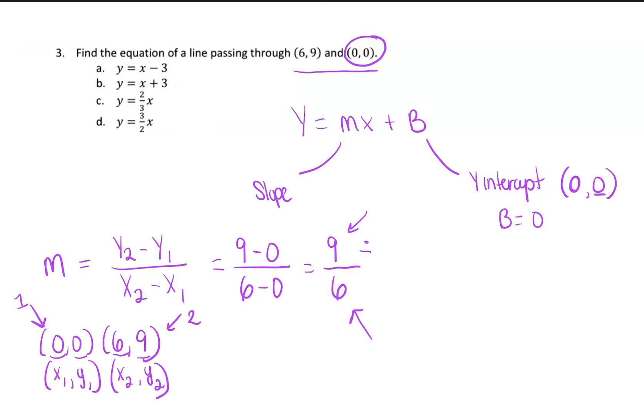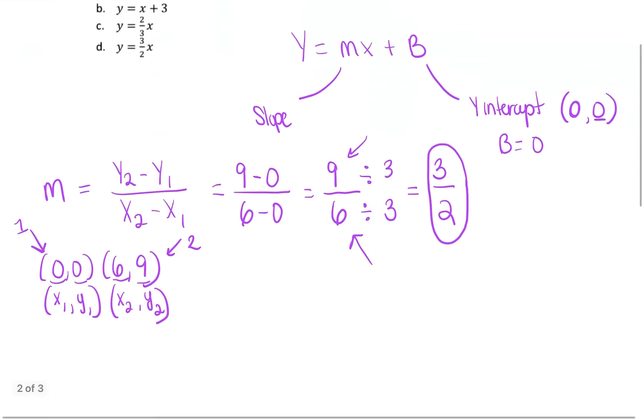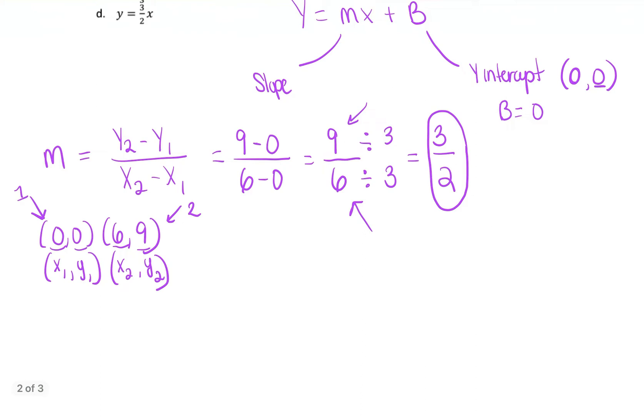Once we find the greatest common factor, 3, we divide the numerator and the denominator by 3. So 9 divided by 3 is 3. 6 divided by 3 is 2. So our slope is equal to 3 over 2. So I'm going to just put our information that we found. Slope m equals 3 over 2. And then b is equal to 0.